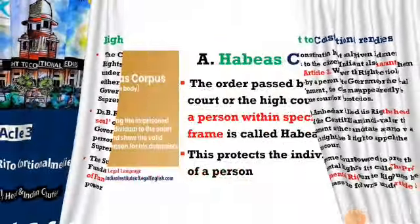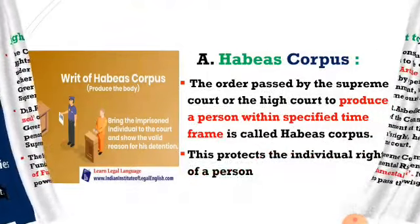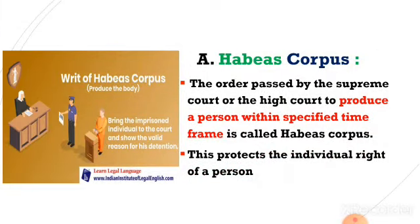There are five writs under right to constitutional remedies. The first one is habeas corpus. This right protects the individual rights of a person. An order passed by the Supreme Court or High Court to produce a person within a specified time is called habeas corpus. According to habeas corpus, after arrest, within 24 hours or one day, the accused person should be presented to the court — thereby protecting them from illegal arrest and punishment.